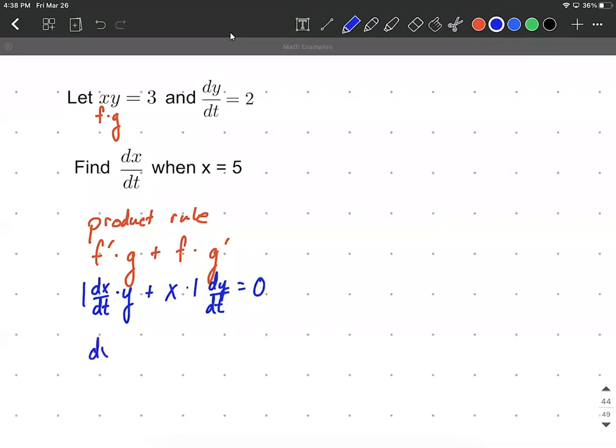We're given that x is going to be 5, so we want to find dx/dt. Filling in the information we do know, we have 5 goes in for x. The 1 I'm going to drop because 1 times 5 will be 5, and then dy/dt is going to be 2.